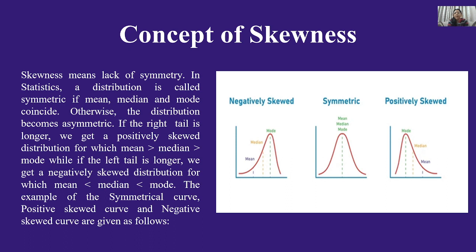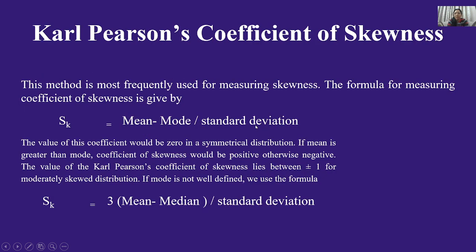यह जो curve बनता है वो बिल्कुल symmetrical है, यानि कि दोनों sides — अगर बीच से लें — तो mirror images हैं एक दूसरे के। तो skewness और kurtosis नहीं होती है। जब यह असममित होते हैं, जब इनकी सममिती में disturbance होता है, तब skewness और kurtosis का concept उभरता है। इसका Hindi अर्थ तिर्चापन जैसा है। तो आप इसको skewness और kurtosis से पढ़िए।